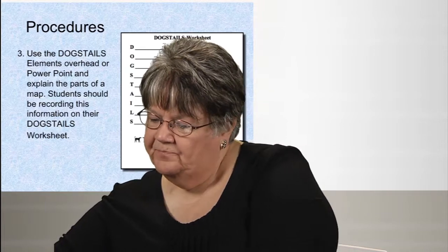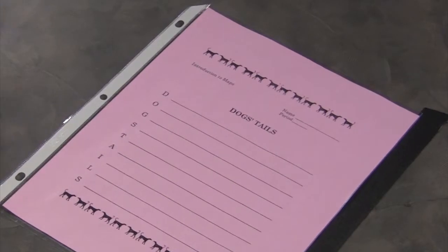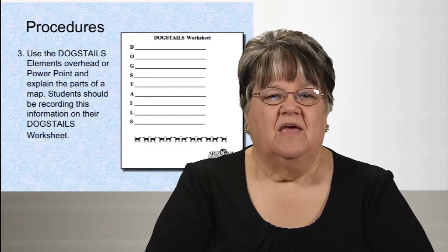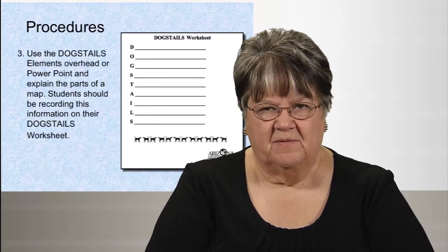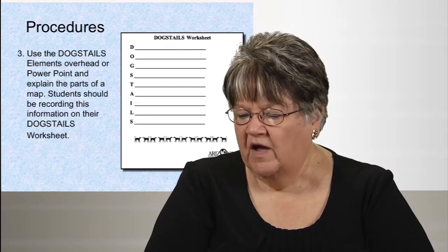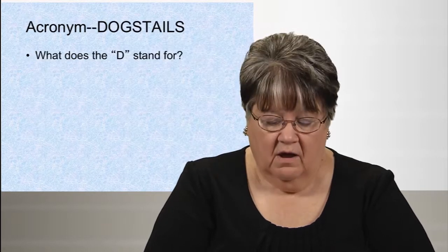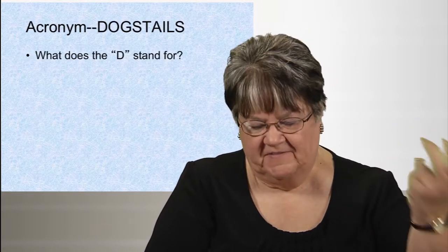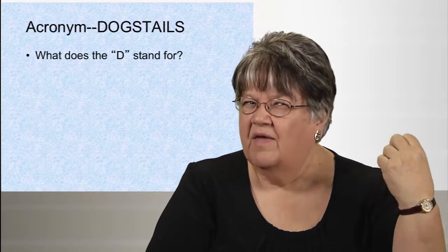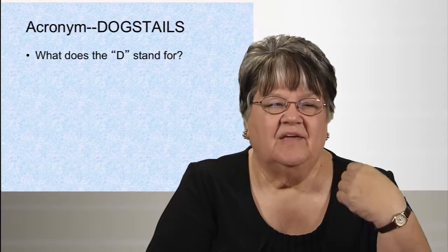You're going to give the students a worksheet that has the acronym on it. Then you can use an overhead or a PowerPoint to explain the parts of the map — I'm going to use the PowerPoint included. As we talk about what each element stands for, students should be recording on their worksheet. I do it as a question-and-answer: I'd say, 'What do you think the D stands for in Dog's Tales? What could be a D word?' One of the sharper students will say 'direction,' which is a great word, but we're going to save that for a different letter.